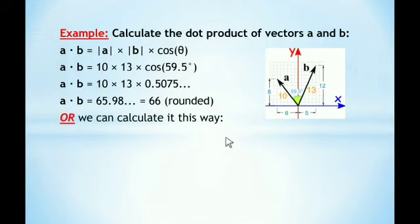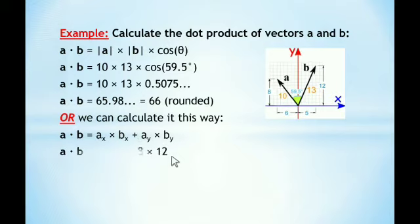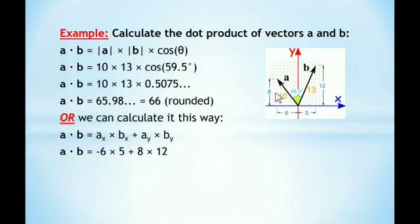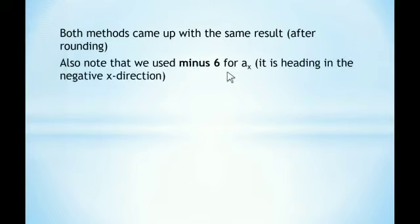We can also calculate it using the component method: multiply x component with x component and y component with y component, then add. The x component of a is −6 (negative because it heads in the negative x direction) and the x component of b is +5. The y component of a is 8 and the y component of b is 12. Multiplying and simplifying, we again get 66. Both methods came up with the same result after rounding.